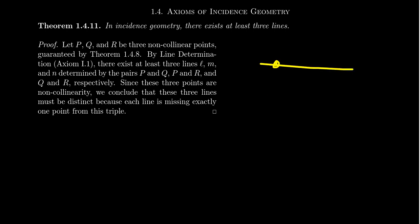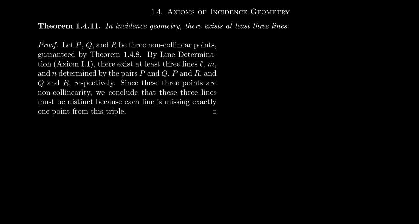So what we want to do now is this first theorem, we're going to prove really line existence. We're going to prove that there exists at least three lines. The point existence axiom says there's at least three points. Why are there at least three lines?